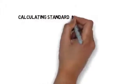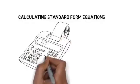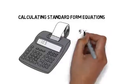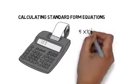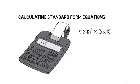Let's move on to calculating standard form equations. Take this example: 5 times 10 to the power of 9 times 3 times 10 to the power of 7.